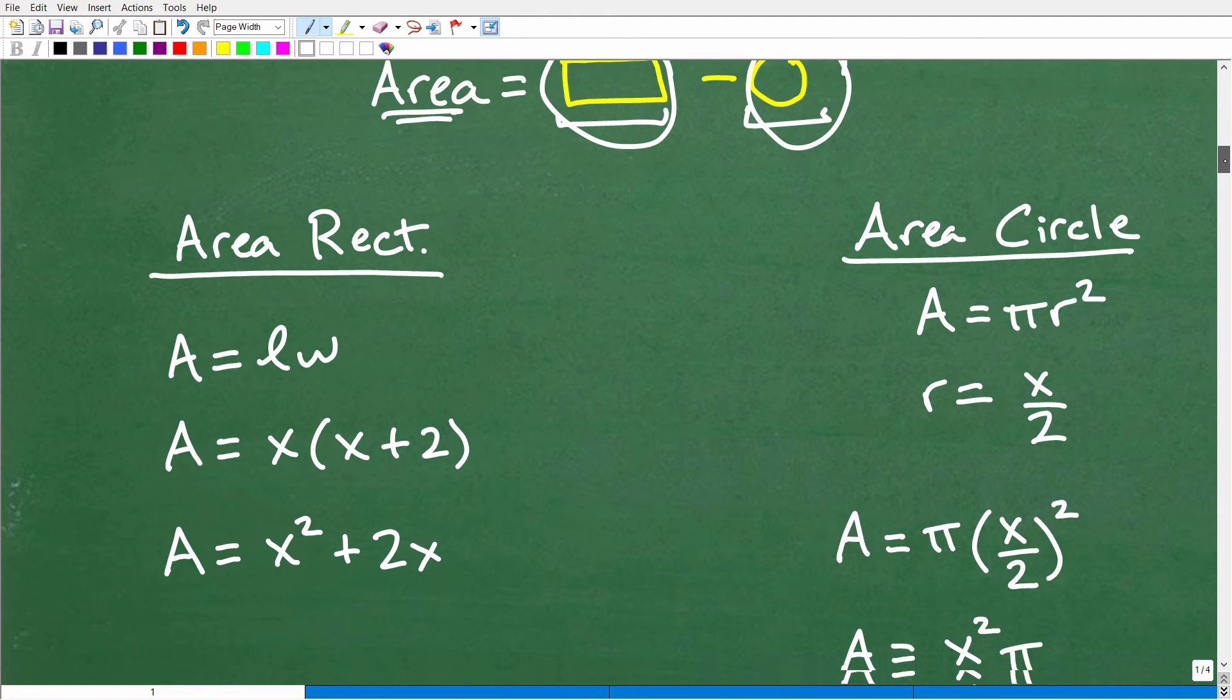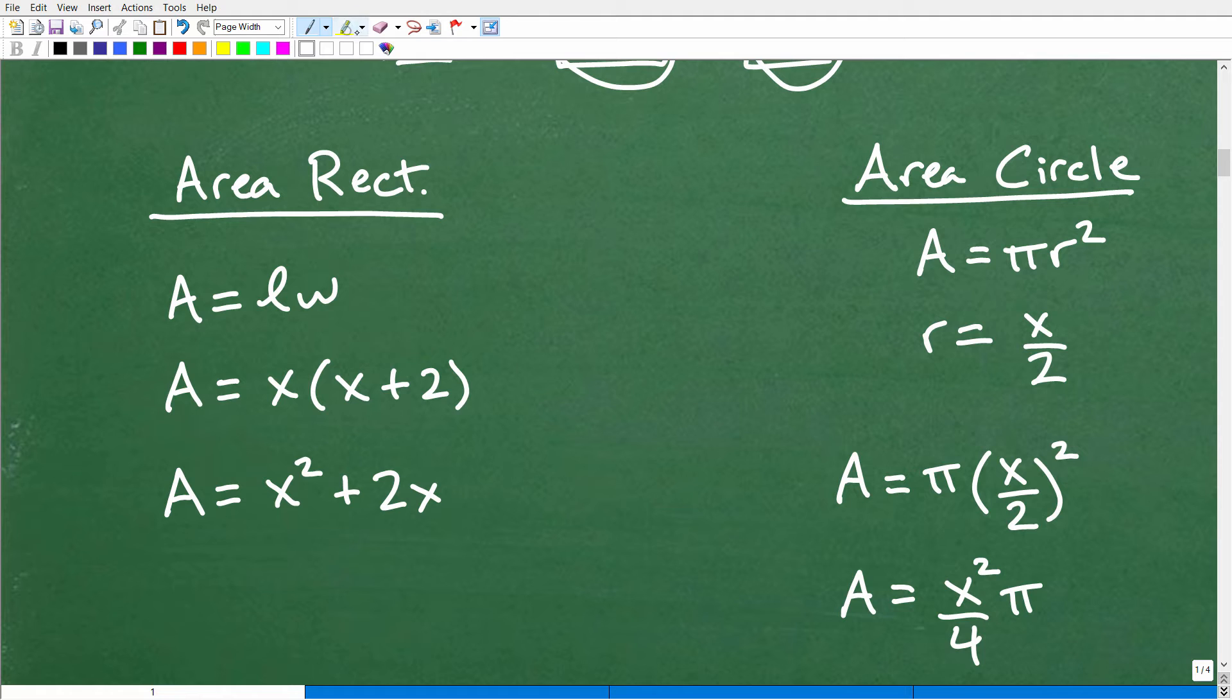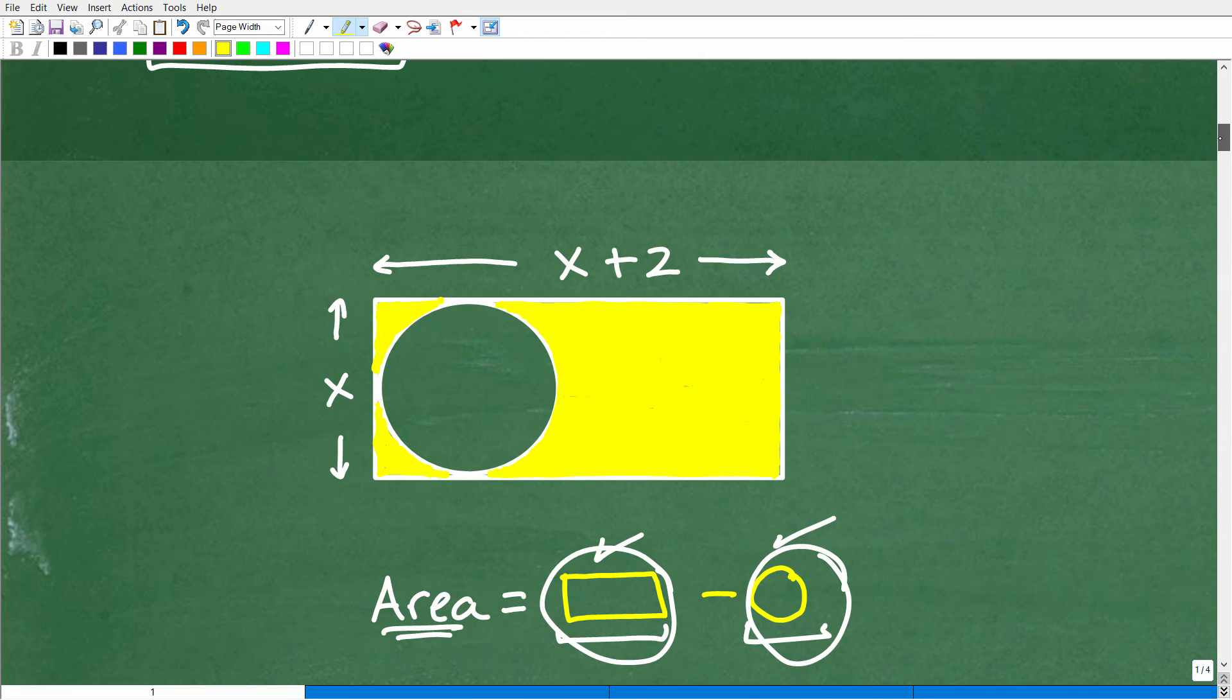Let's go ahead and tackle this now. And let's start off with the rectangle. So the area of any rectangle is going to be this length times this width. So we can express that here. It's pretty easy. X times X plus 2.